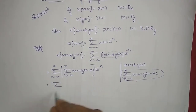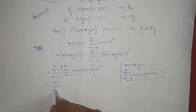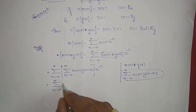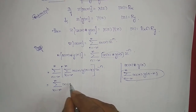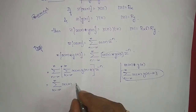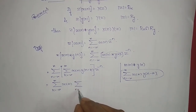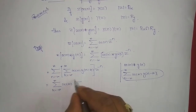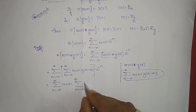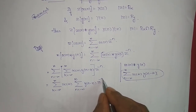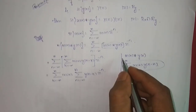Now I will just rearrange it. This becomes summation k varying from minus infinity to infinity of x of k, and the remaining term is summation n varying from minus infinity to infinity of y of n minus k into z power minus n.